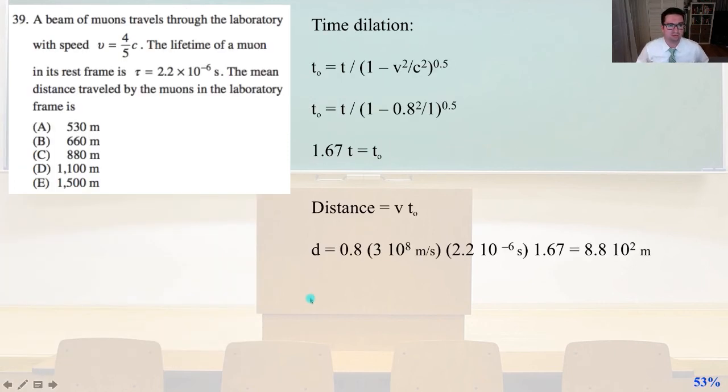Number 39. A beam of muons travels through the laboratory with speed E equals 4 fifths C. The lifetime of a muon in its rest frame is tau equals 2.2 times 10 to negative 6 seconds. The mean distance traveled by the muons in the laboratory frame is, here we're going to use the time dilation formula. So T0 equals T divided by the quantity square root of 1 minus V squared over C squared.